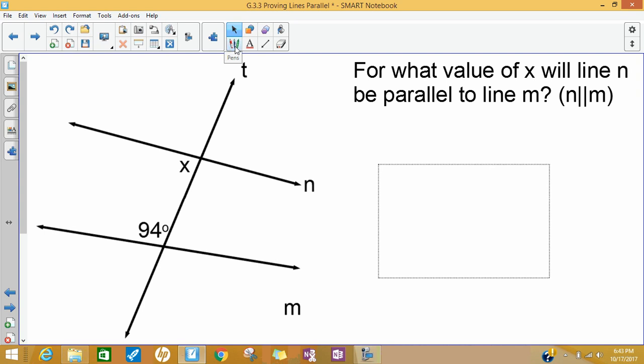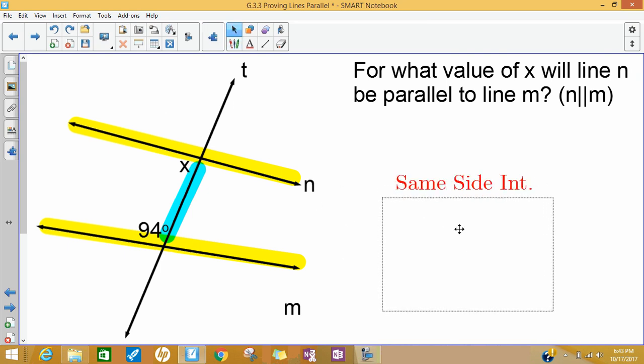In order for these two to be parallel, I need to see what angle relationship I have. They're both interior but on the same side of the transversal. They're same side interior angles, so they need to be supplementary if line n and m will be parallel. So x needs to be 180 minus 94, so that other angle x needs to be 86 degrees.